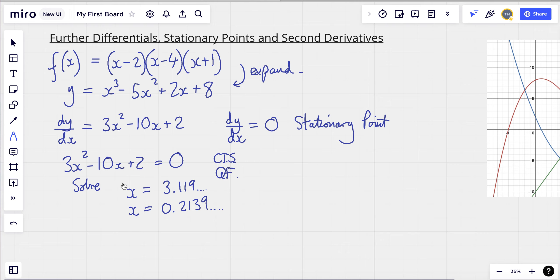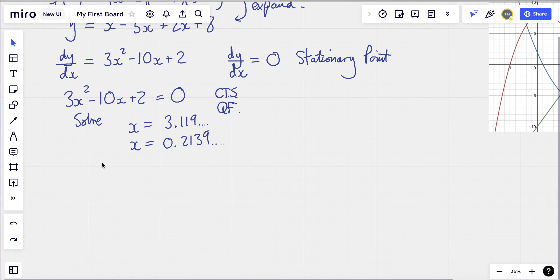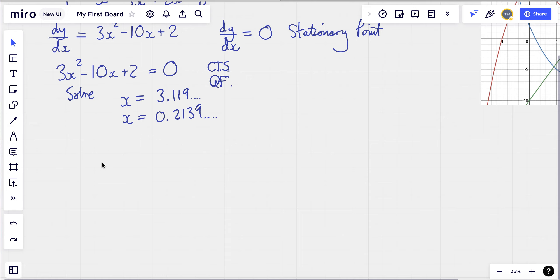So to show this, or to prove it, what I need to do is I need to differentiate this a second time. So I need to find d²y/dx². So to do this, take your 3x squared, turn that into 6x. Take your 10x, that's going to become minus 10. So here's my second differential. And I'm going to use this to decide whether I've got a maximum or a minimum.